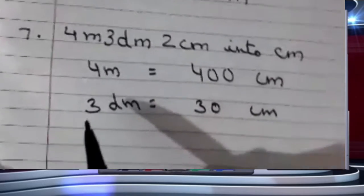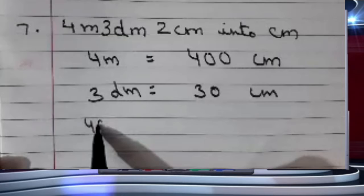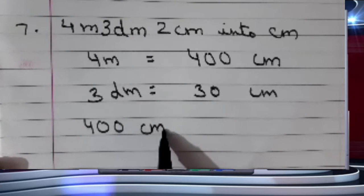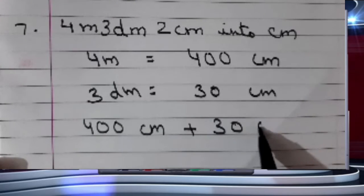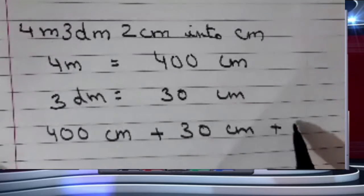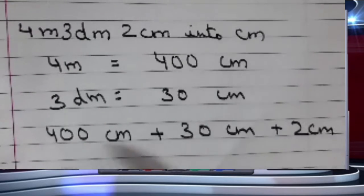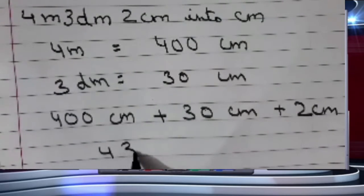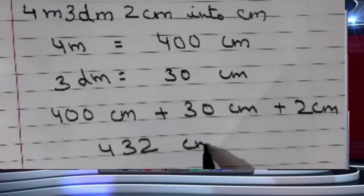This 2 centimeter is already in centimeter only. So now all the units have become centimeter and I can add all of them. All the units are same, so I will add all 3. That is 432 centimeters.